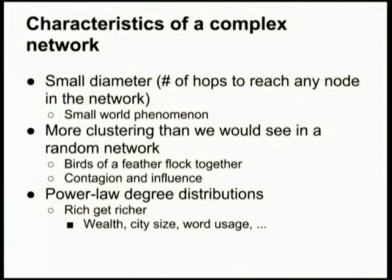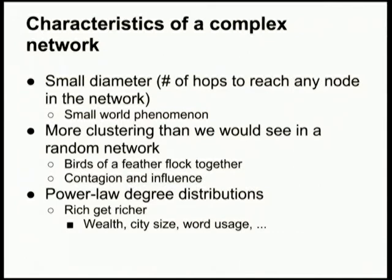A few characteristics of a complex network — these properties pretty much hold true with complex natural networks. First, a small diameter: the number of hops it takes to reach any node in the network. You'll recognize this as the small world phenomenon. Studies have said there are six degrees of separation between any person in the entire world, which is pretty impressive. There's also more clustering than you would see in a random network — we see in natural complex networks many more pockets of densely connected people. This idea of looking at pockets of densely connected edges is the thrust of what I'll be talking about later.